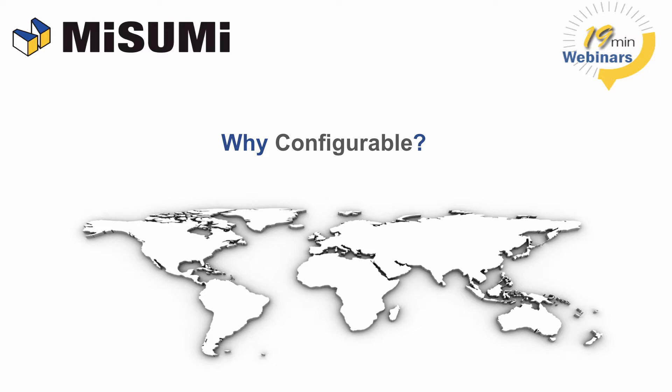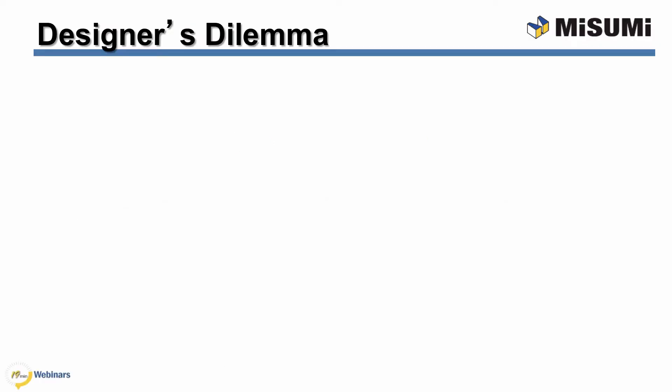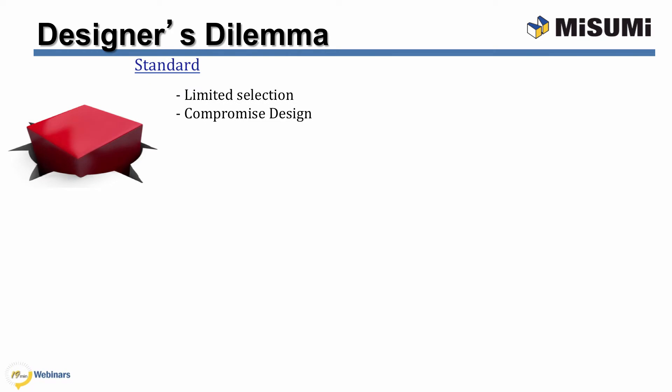Configurable components solve the designer's dilemma. A designer has two choices for components: standard or custom. Standard components have limited selection and often force designers to compromise their designs. These have many pluses, such as CAD, static part numbers, fast delivery, and often seem inexpensive and convenient.